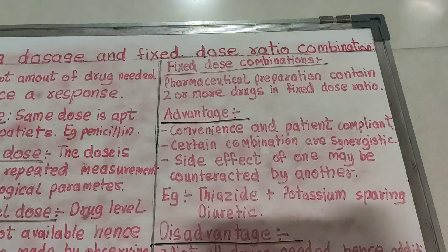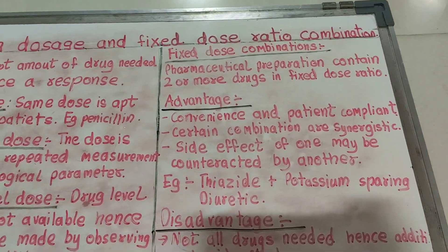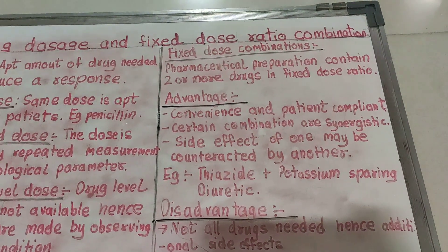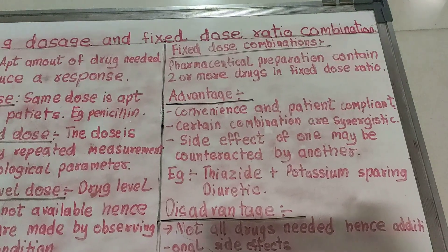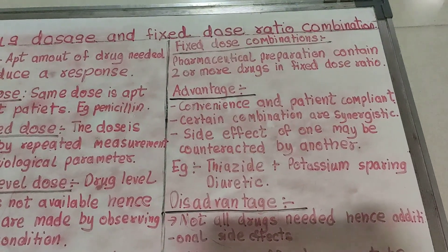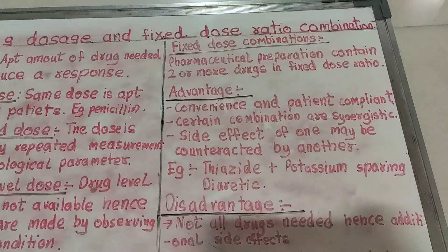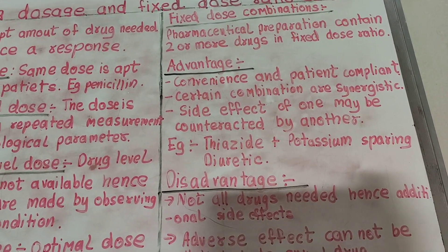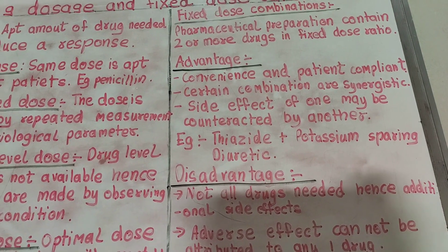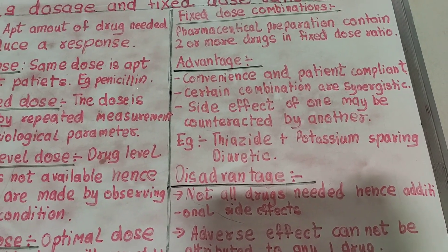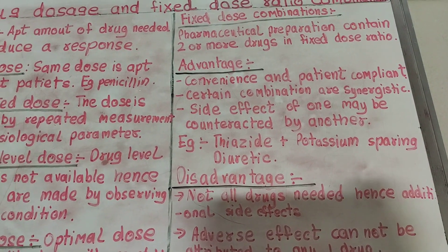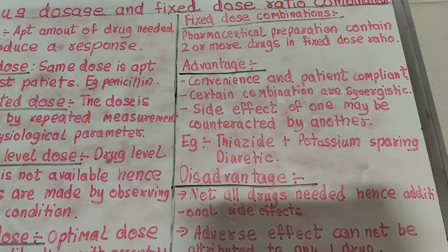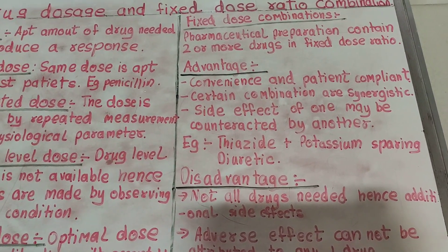Now we move on to fixed dose combinations. Fixed dose combinations are pharmaceutical preparations that have one or more drugs in a fixed combination ratio, such as one-to-two, two-to-one, or others. The advantage of these combinations is that they are convenient and patient compliant — the patient just has to take one medication and does not have to take multiple drugs, which relieves some stress and anxiety.